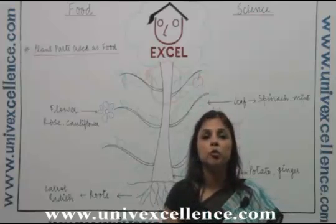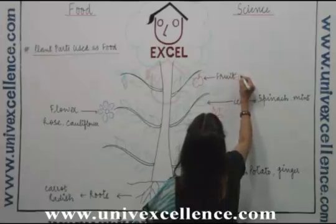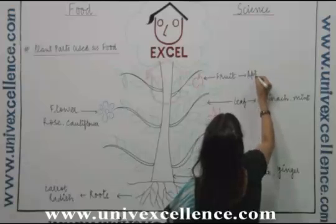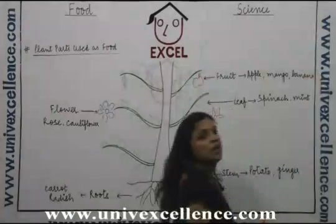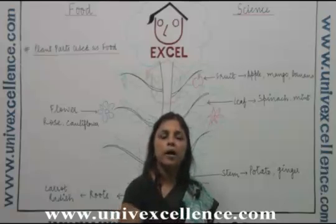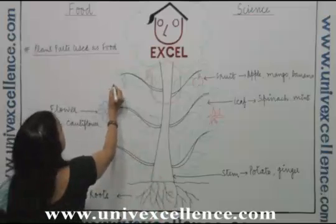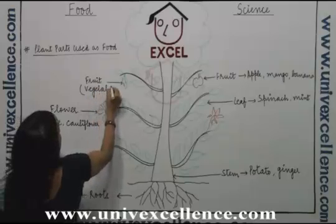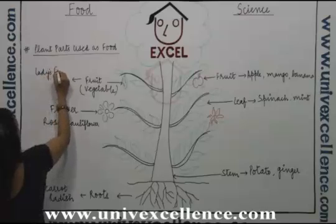In some plants, the food gets stored in the fruits. These pulpy fruits we eat as food — apples, mango, banana. These are different fruits in which the food gets stored. In some plants, the food is stored in the fruit but we use that fruit as a vegetable, like lady's finger and tomato.